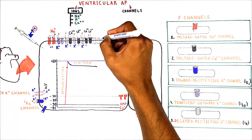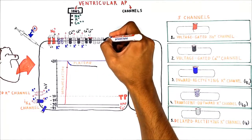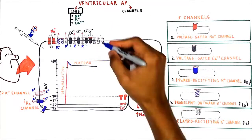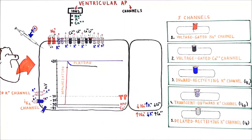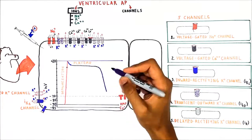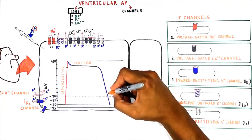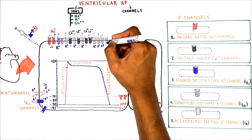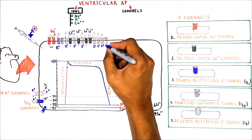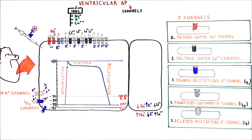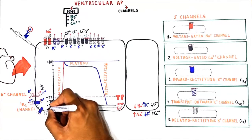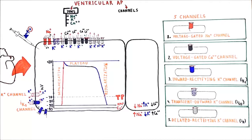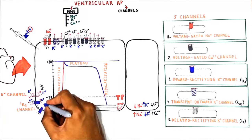Then the voltage-gated calcium channels close and calcium influx stops. However, at the end of the plateau phase, delayed rectifying potassium channels open more rapidly and we get massive potassium efflux. This massive efflux of the cation returns the membrane potential to its resting state — this is called repolarization. When repolarization is complete, delayed rectifying channels close and potassium stops leaving through this channel. At the end of repolarization, inward rectifying potassium channels (IK1 channels) reopen and further facilitate potassium movement.